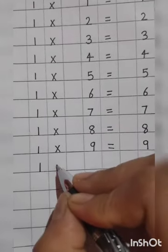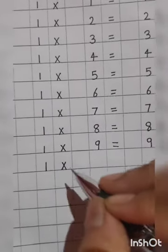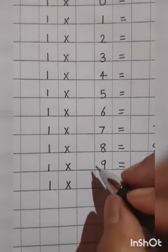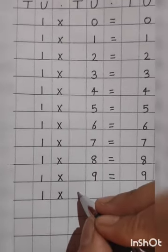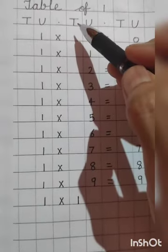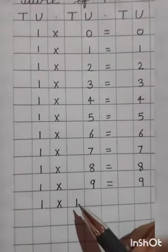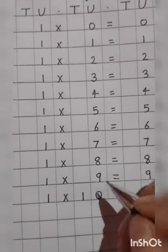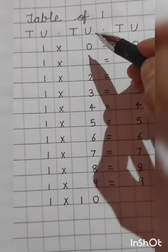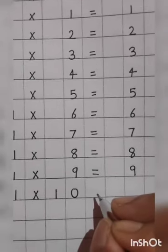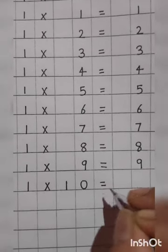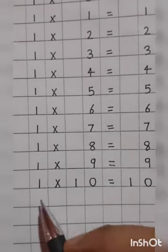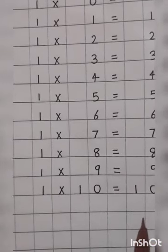One. Multiply. Now we have ten. Means two digit. So one comes under T and zero comes under U. Equal to ten. One tens are ten.